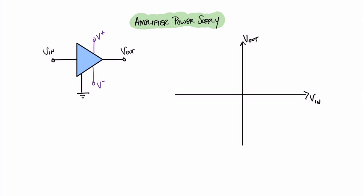There are several questions we should consider given that we have an input signal, output signal, and power supplies all providing power. Let's look at the power balance. The power from the positive supply is V plus times the current in that rail, and for the negative supply it's V minus times its current. Therefore the total power from the DC power supplies is PDC, where PDC equals V plus times its current plus V minus times its current.